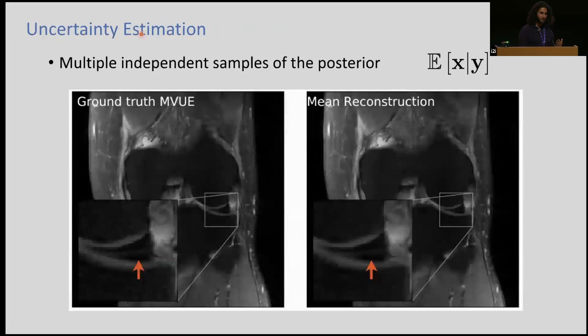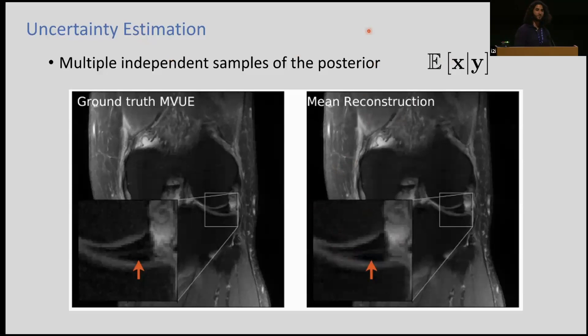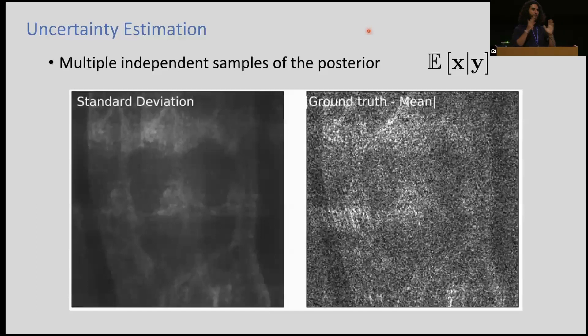Now I have multiple reconstructions representing the same data, so I can use that for uncertainty estimation. If I draw multiple independent samples from the posterior, I can create the mean reconstruction — the conditional expectation. Here's a nice example from the fastMRI dataset. What we really care about is this particular region, and it would be really nice if we could assign some uncertainty to it. On the left is the ground truth minimum variance unbiased estimate. As a first-order approximation of uncertainty, I can look at the standard deviation of all these images. Even standard deviation on its own kind of tracks the actual error that we see between the mean reconstruction and the ground truth.